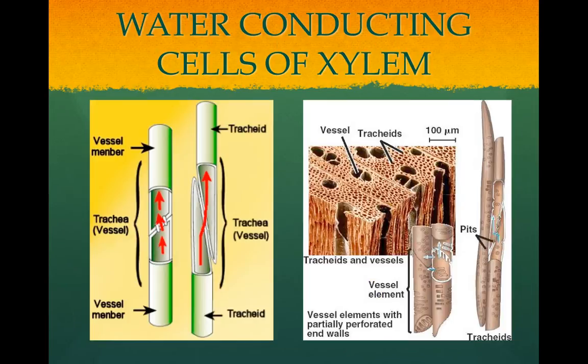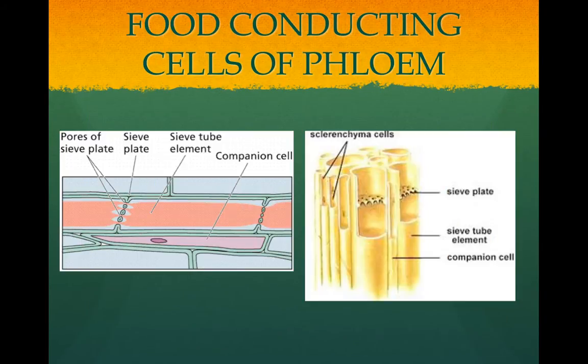The water-conducting cells found in the xylem consist of the tracheids, which are long and tapered, and the vessel elements, which are wider. Food-conducting cells, which are found in the phloem, are made of sieve-tube members. They have no secondary walls. The ends have holes for sugars and other nutrients to pass through.